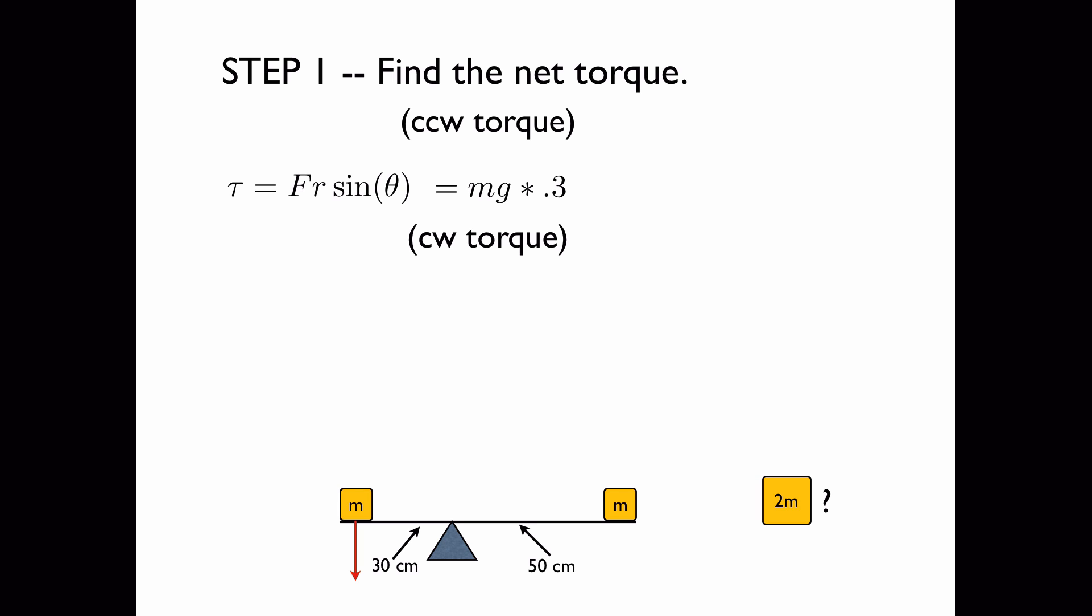Next we do the clockwise torque which is due to the mass on the right hand side. We have the same equation for torque and once again sin theta is 1. The force is the same but the radius is 50 cm or 0.5 and we add a negative sign because the torque is clockwise.